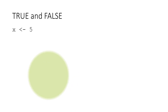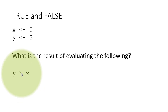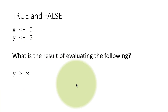Suppose we assign the value 5 to x and we assign the value 3 to y, and then we evaluate the expression y greater than x. That's an expression — y greater than x — it's either true or it's false. Greater than is a comparison operator and the result of this expression is a Boolean. In this case the result is false because 3 is not greater than 5; 3 is actually less than 5.